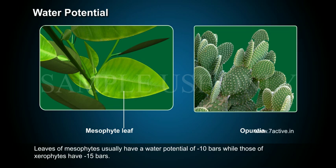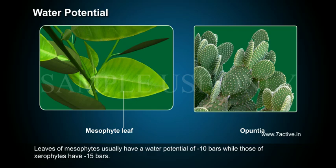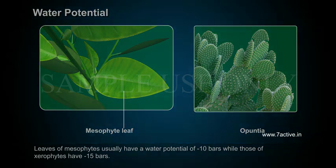Leaves of mesophytes usually have a water potential of minus 10 bars, while those of xerophytes have minus 15 bars.